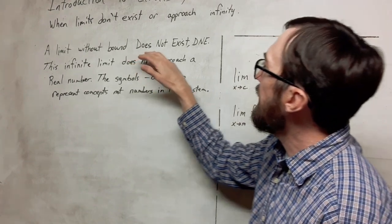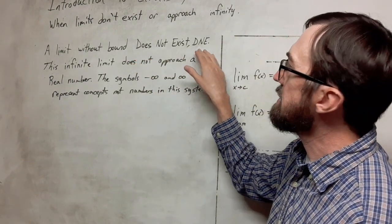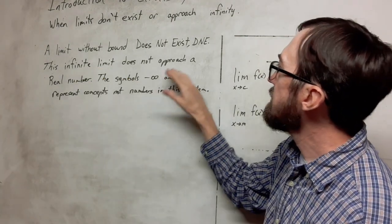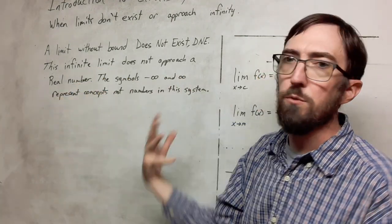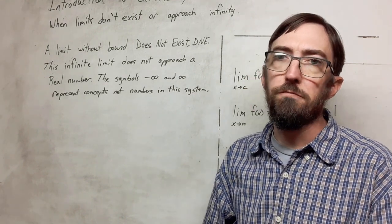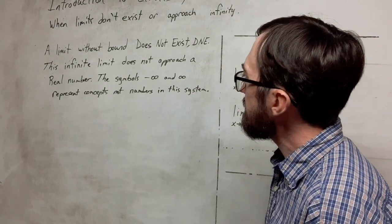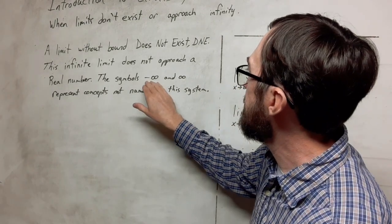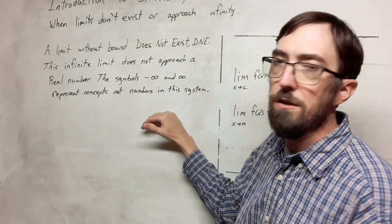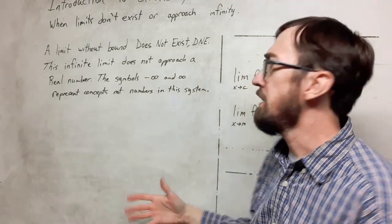A limit without bound does not exist. We can write DNE for that. This infinite limit does not approach a real number, which in this series, we are looking specifically for real number values.